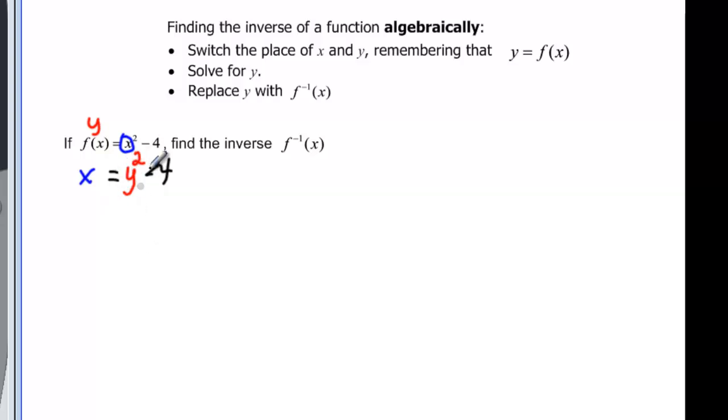So I'm solving for y, so I have to add 4 to both sides. So x+4 is going to be equal to that y squared. And since it's y squared, I need to take the square root so that I can cancel the square and the square root to get y.